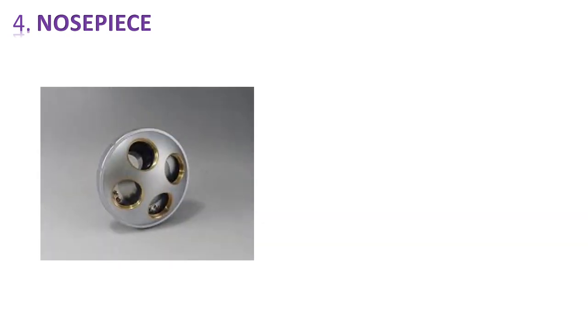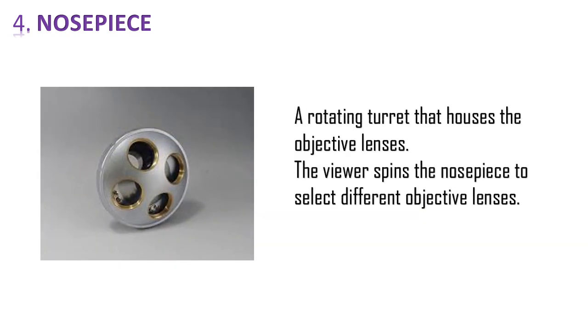And number 4 is nosepiece. And it is used to connect the objectives. It is a rotating turret that houses the objective lenses. And the viewers spin the nosepiece to select different objective lenses of different powers. So we can spin this nosepiece to choose different powers of objective lens.